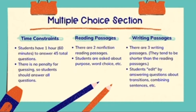The AP Lang exam has two parts. It starts with the multiple choice section, and then after a quick break, students move on to the free response questions, which are the essays. For the multiple choice section, students have one hour — 60 minutes — to answer a total of 45 questions. There is no penalty for guessing, so it's better to answer all of the questions even if you're not totally sure. Unlike the ACT or SAT, AP Lang multiple choice questions have five answer choices, not four, which makes it a little bit harder.